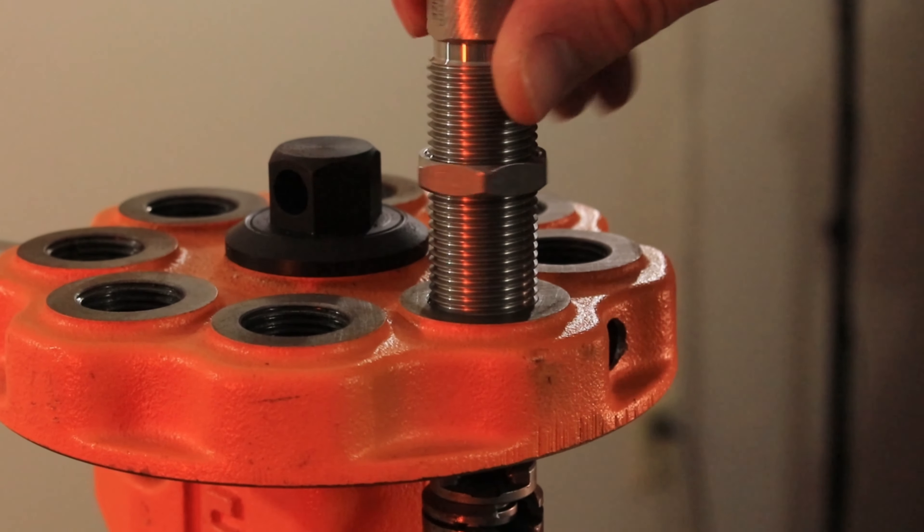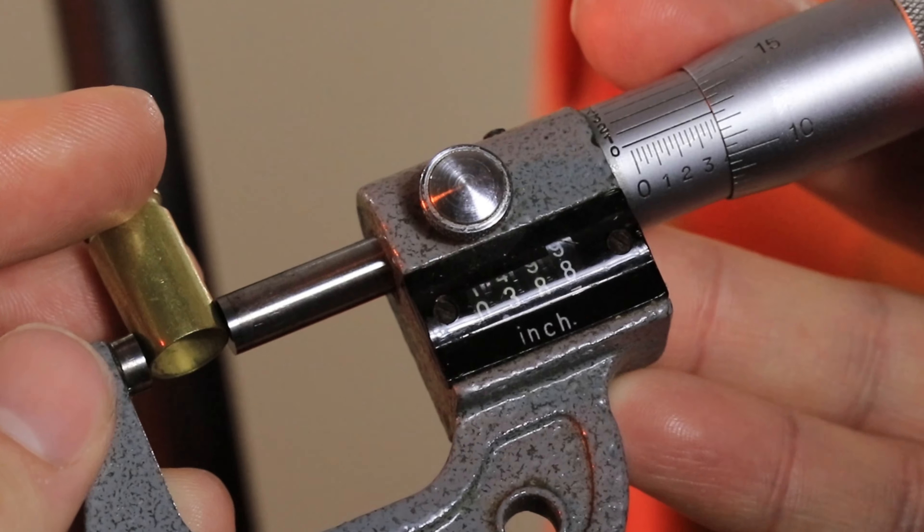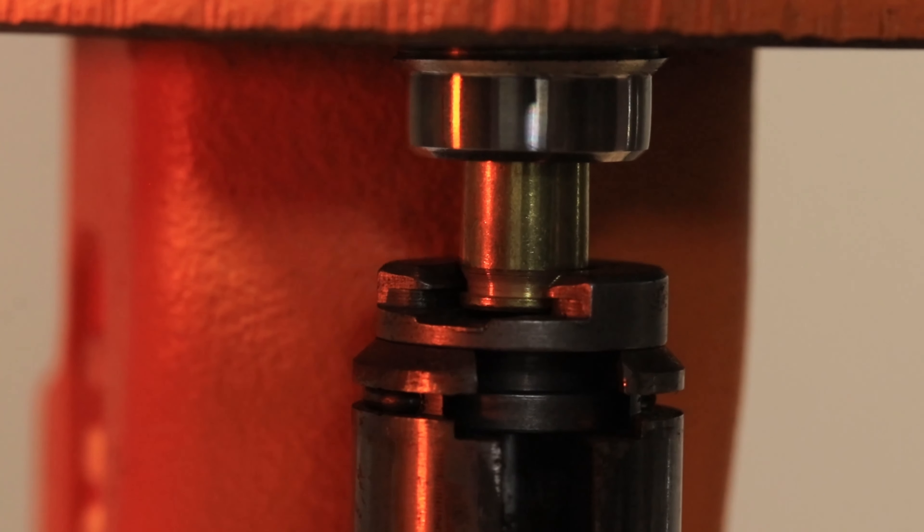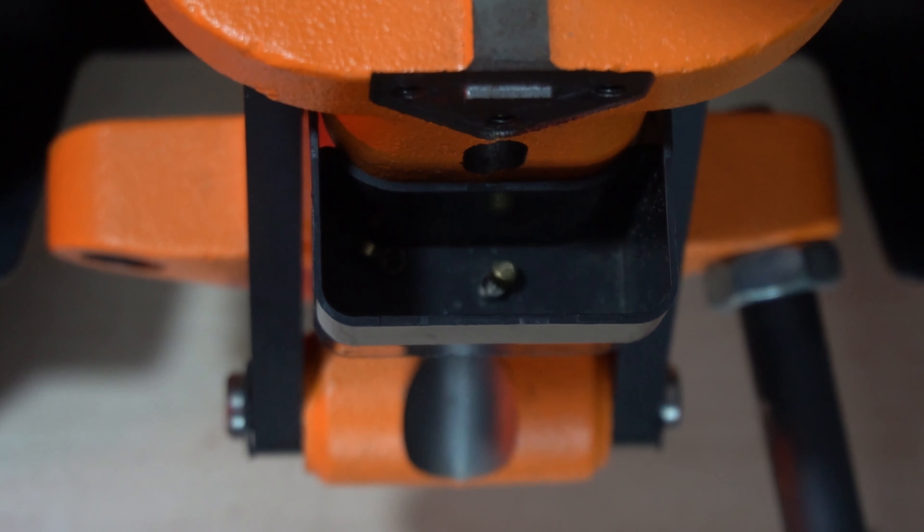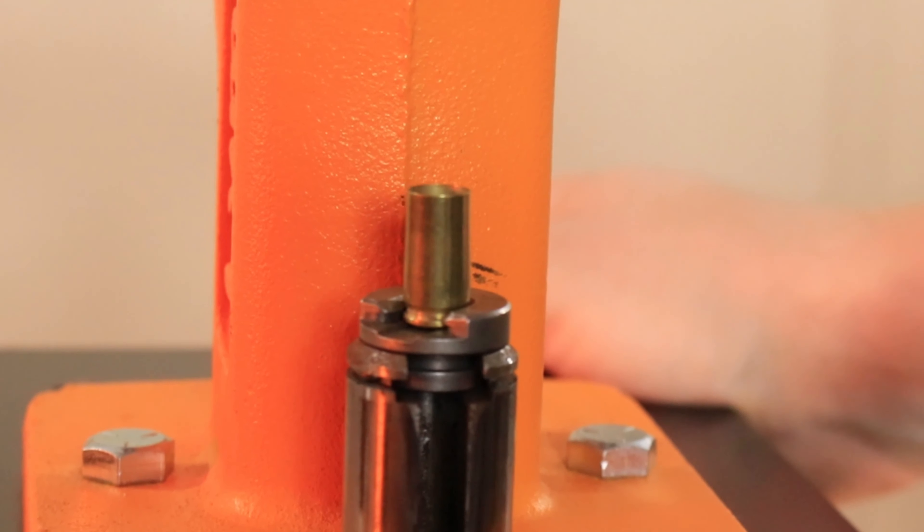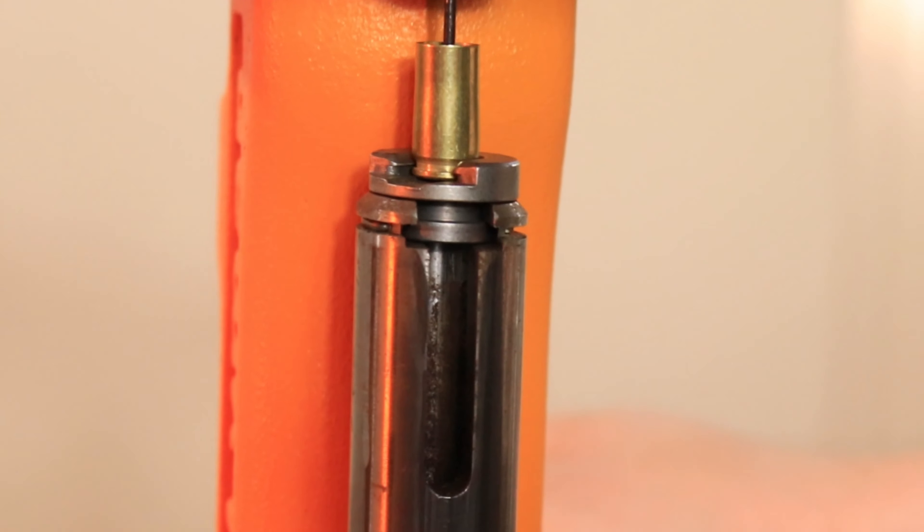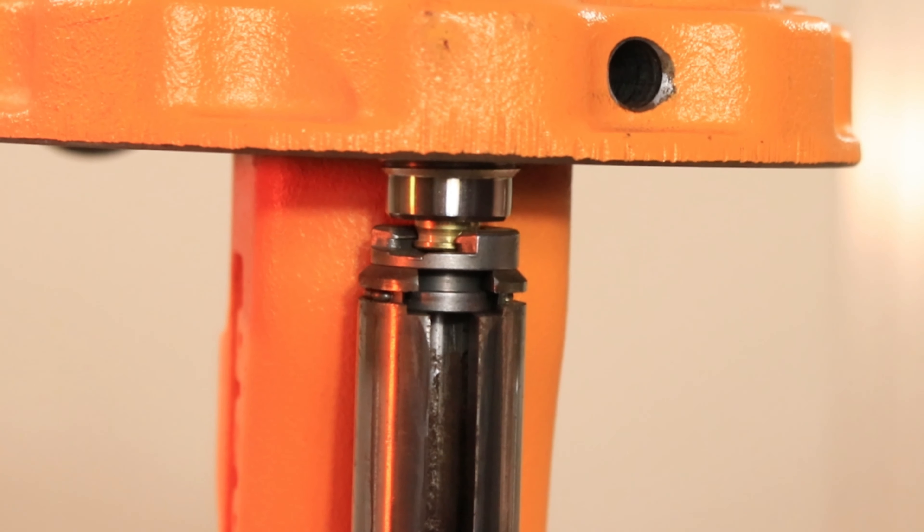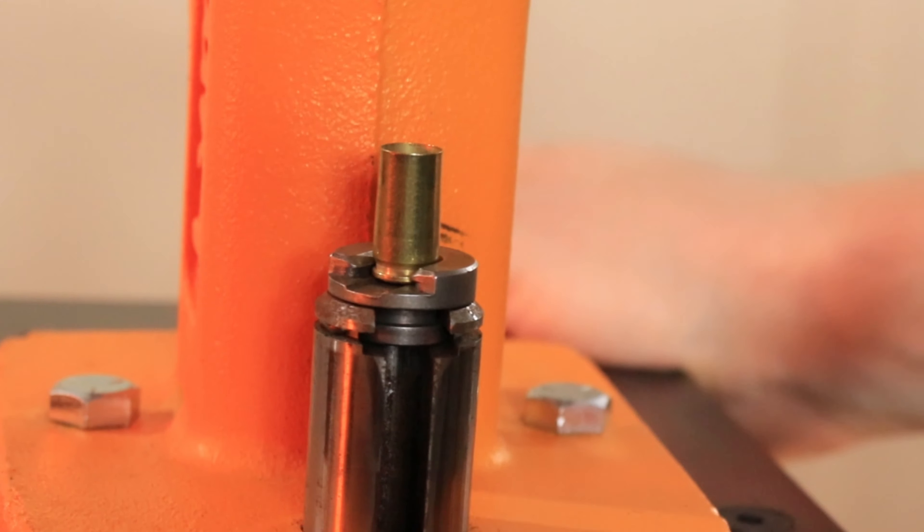Sizing is the first step in the reloading process. It takes fired brass and brings it back to factory dimensions. As the die sizes, it also uses the decap function which removes the spent primer from the case. By squeezing the brass back down to those dimensions, it allows for proper neck tension to hold the bullet in place and it allows it to fit back into the chamber.